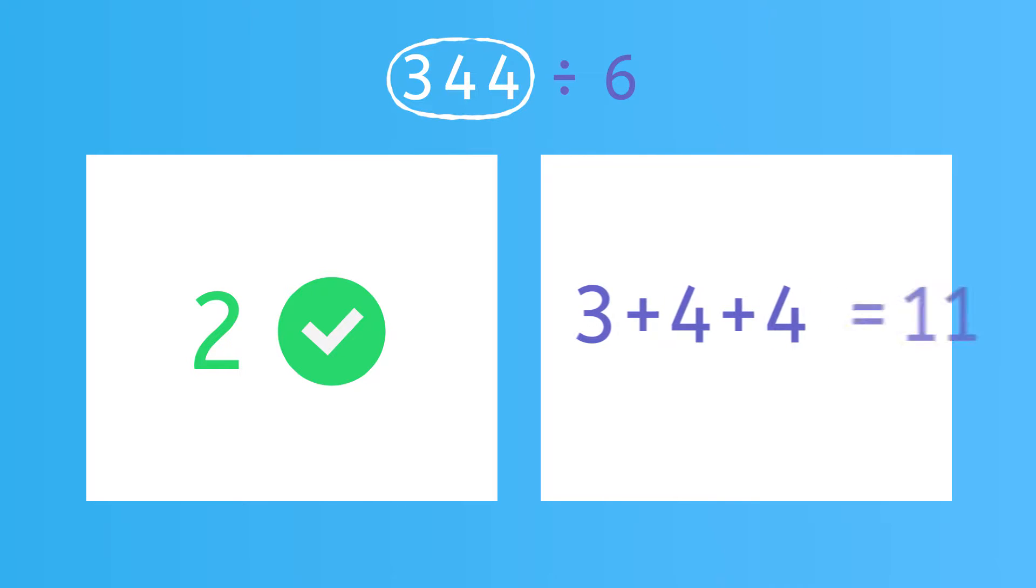Now, let's look at another example. 344. Again, the last digit is even, so it passes that rule. But when we add them up, 3, 4, and 4, it's 11, which is not divisible by 3. Even though it passes one rule, if it doesn't pass both rules, this number is no good. So 344 is not divisible by 6.